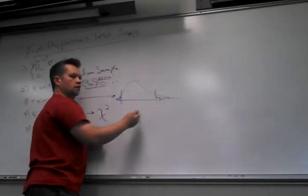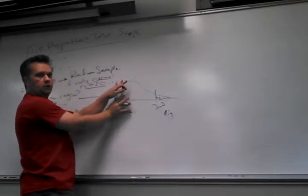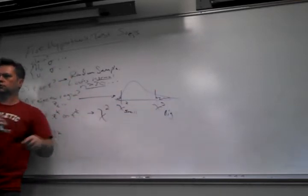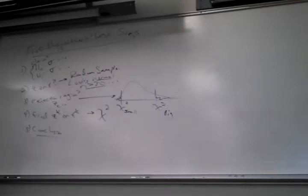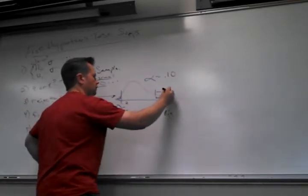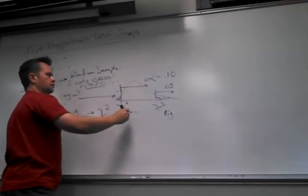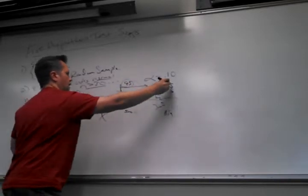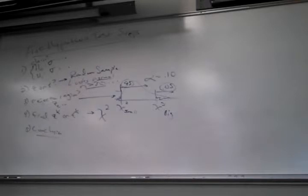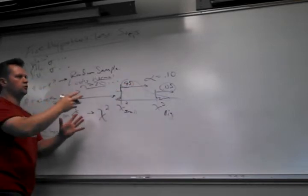So if I had a two-tail test, what's going to define my rejection region? Chi-square small and chi-square big. If it's a one-tail test greater than, it'd be chi-square big; if one-tail less than, it'd be chi-square small. If alpha is 0.10 and you have a two-tail test, how much area is in each tail? 0.05. And the other side is going to be 0.95, because the nice thing is these two have to add to one - that's a quick check you can make. The conclusion is the same thing as always: you calculate your chi-square and see where it falls.